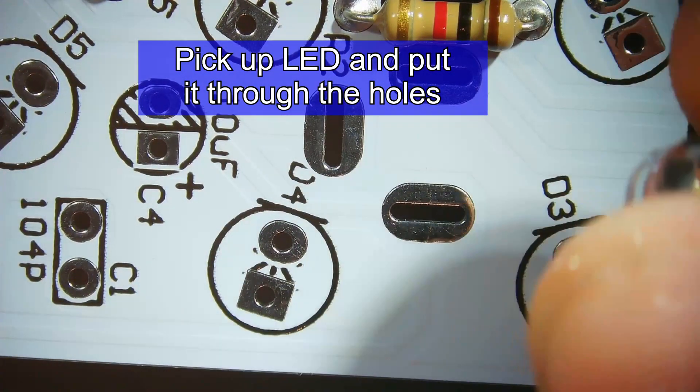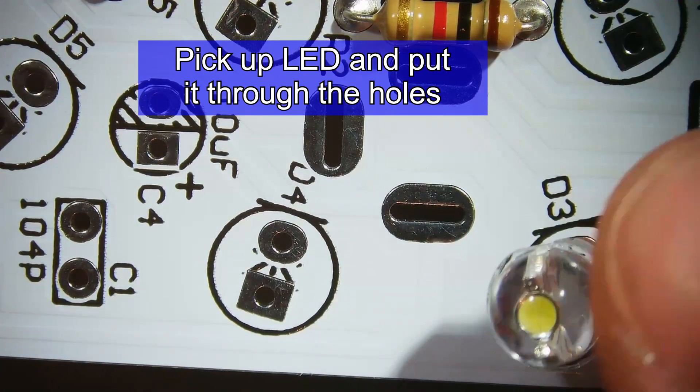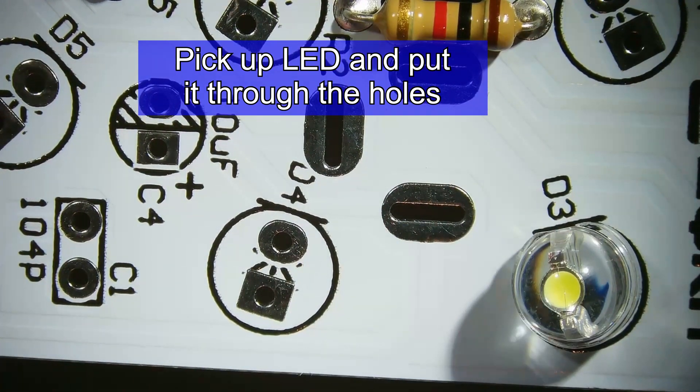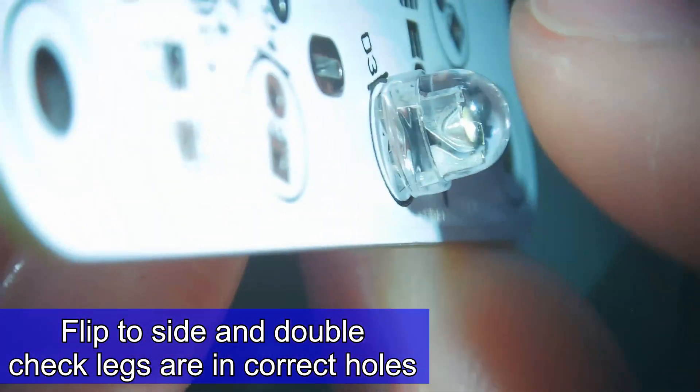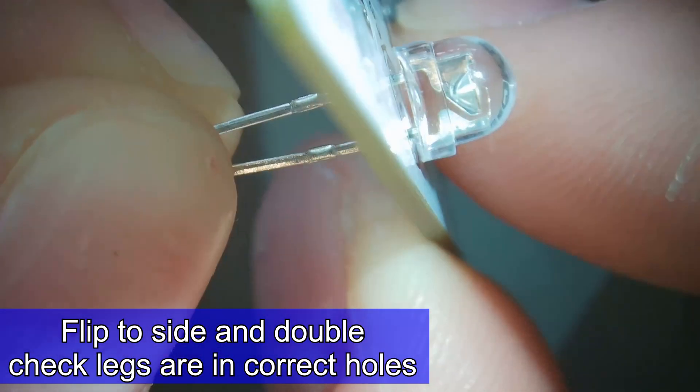Then we're going to pick up the LED and put it through the holes because it's a through-hole component. Now we're going to push it down, flip it to the side, and hold onto it with our finger.